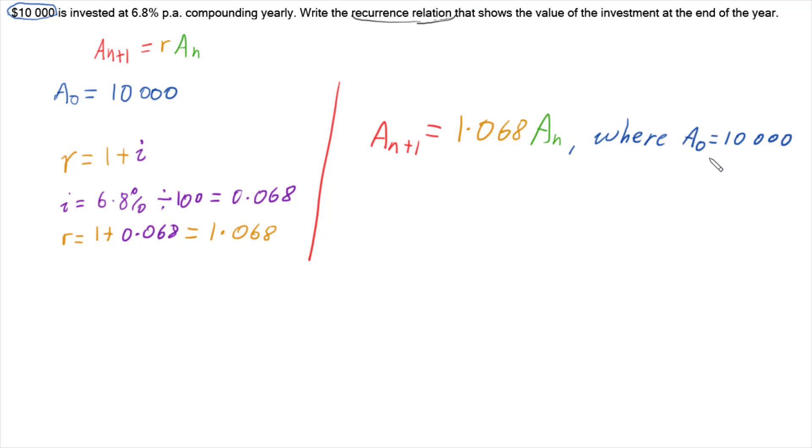And so that is our recurrence relationship. That is our final answer. The formula that works out how much is in our account at the end of each year is 1.068 times the previous year, where our first year, we started off with $10,000.